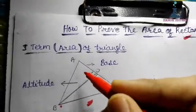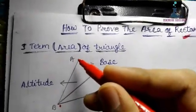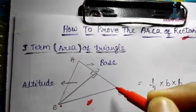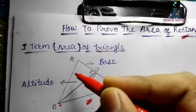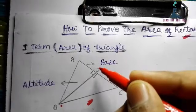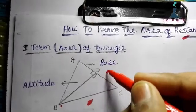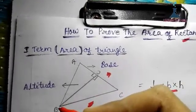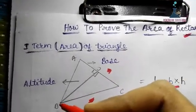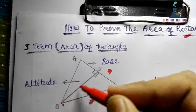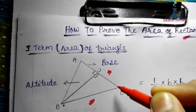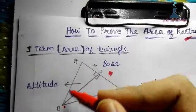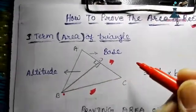We can take the perpendicular from a vertex — we can take it from C as well. The base is dependent on which altitude you choose. If you take a perpendicular altitude from B, then the base will be AC. If you take it from C, then the base will be AB.